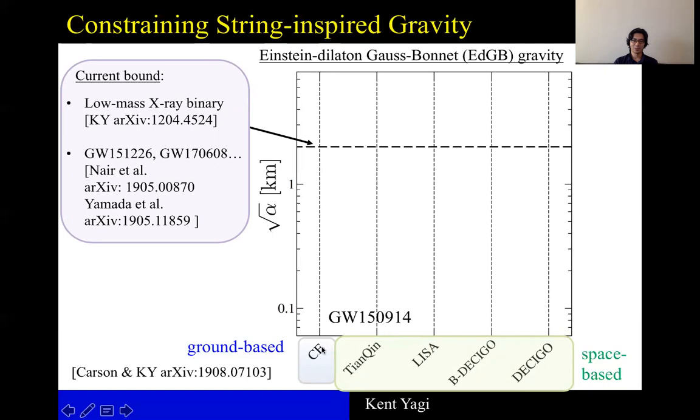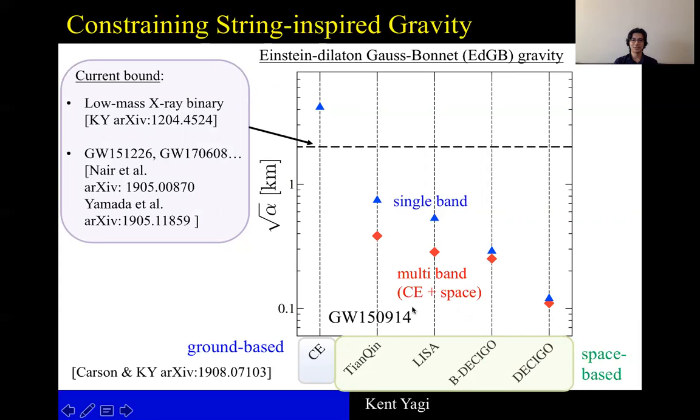Now imagine that in the future we have these detectors online and they detect GW150914 events, then you can place bounds, upper bound that corresponds to these blue triangles if we just use these detectors alone.